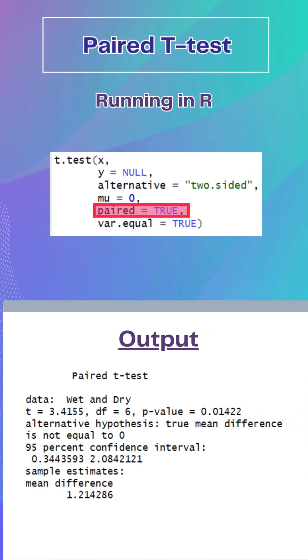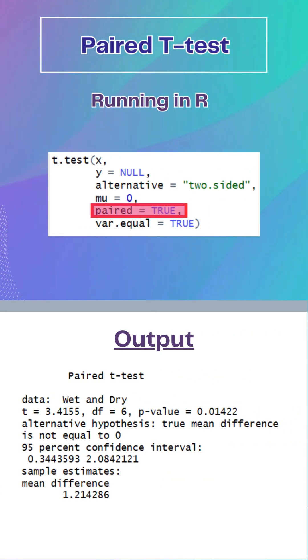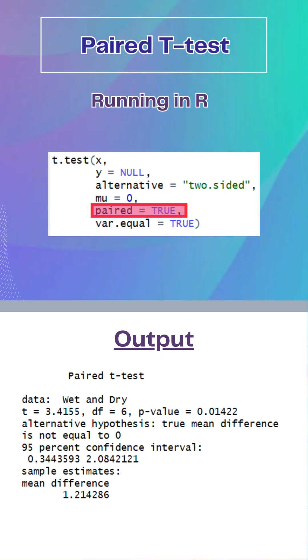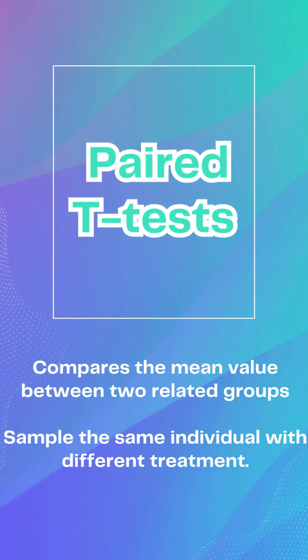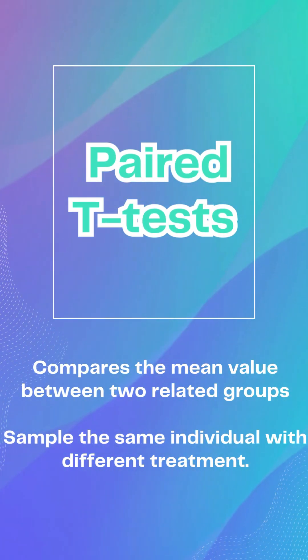You can run a paired t-test in R using the t-test function with the paired equals true argument. The output gives us our test statistic, mean difference, and p-value. And that's it for the paired t-test. For more information, check the description.